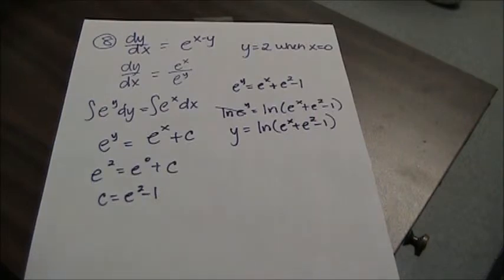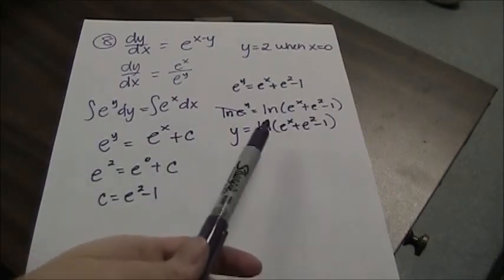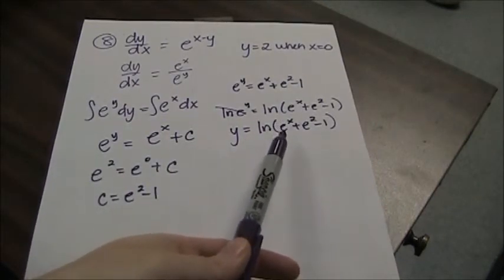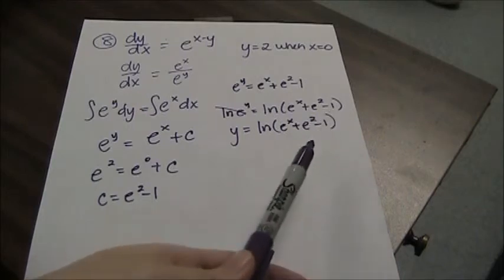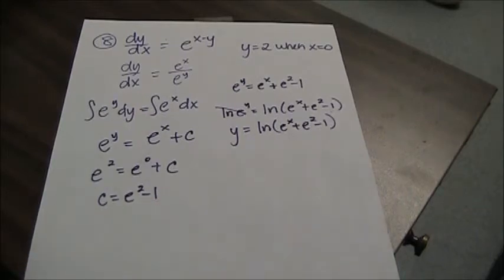Now for this one, you may be tempted to do some canceling, like you may assume that you can separate this into natural log of e to the x plus natural log e squared minus natural log of 1. And unfortunately, it doesn't work that way with natural logs, only when it's an exponent of like bases.